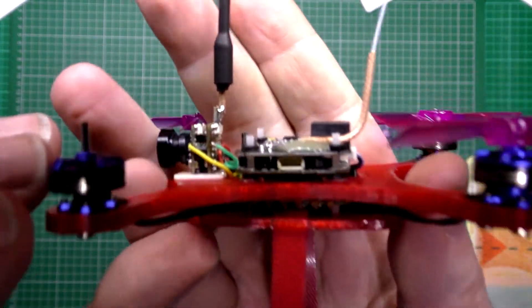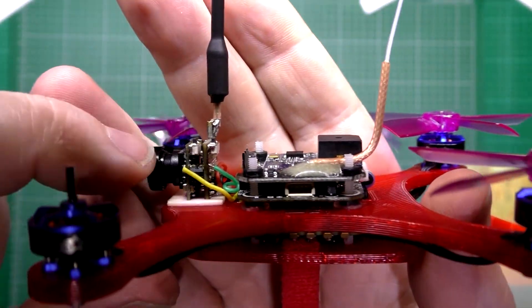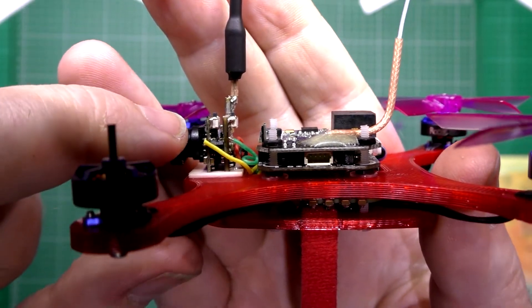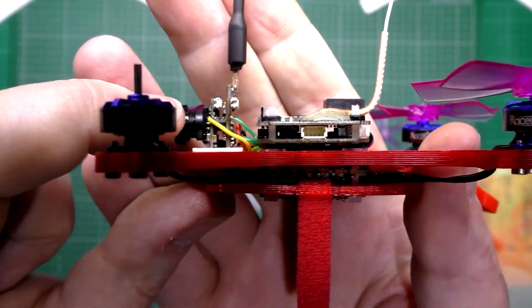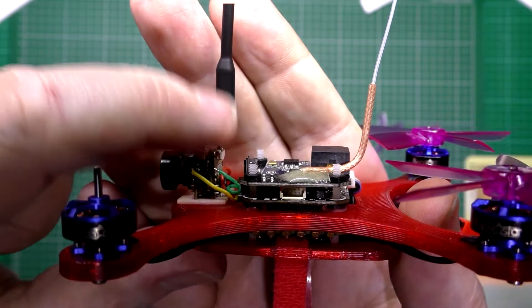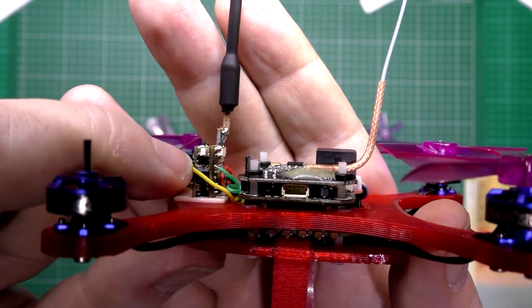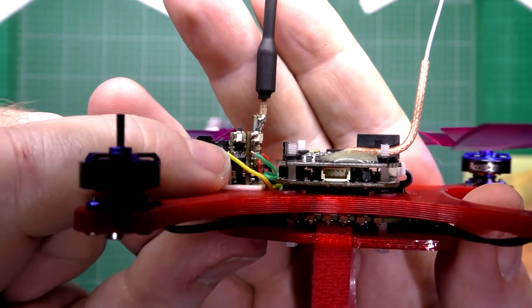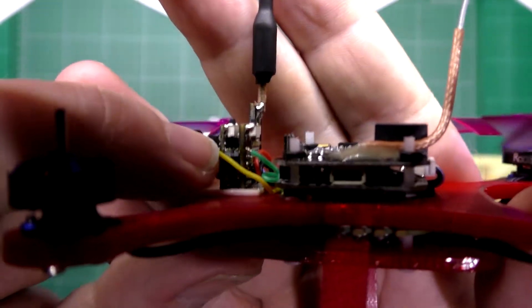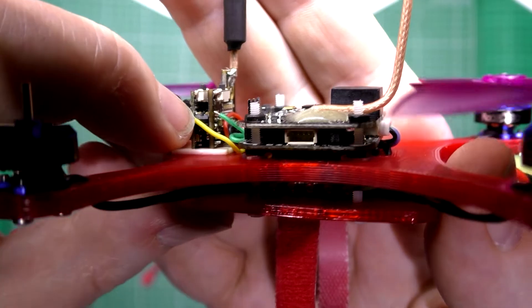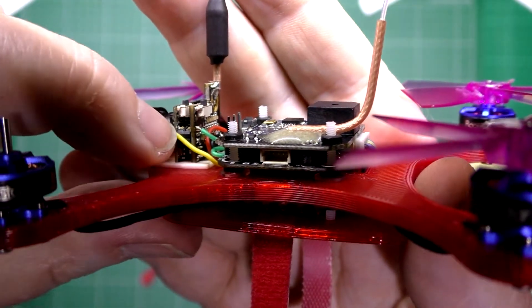Now on the VTX, this is a Crazy Pony or Craze Pony or whatever it is VTX and camera combo thing. Now you can make these into an OSD or you can hook them up to your OSD. I don't know if you'll be able to see but there's three pins in there.